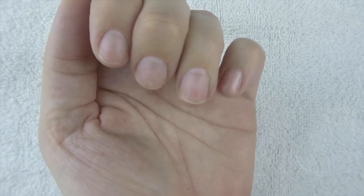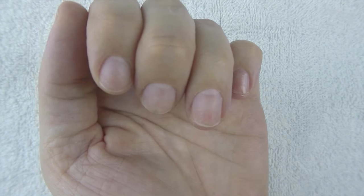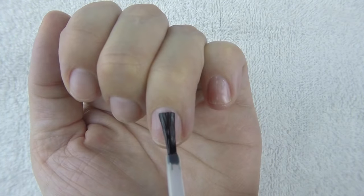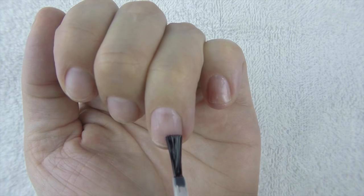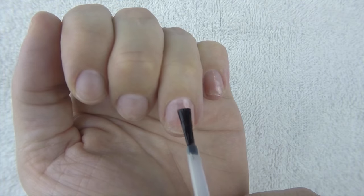Practice getting your coats done in three to four swipes, tops. This will actually help keep your polish from drying up in the bottle. As you increase your speed, you'll decrease the amount of time that your bottle is open exposing it to air. Air is the enemy of polish. It will thicken and dry it up.